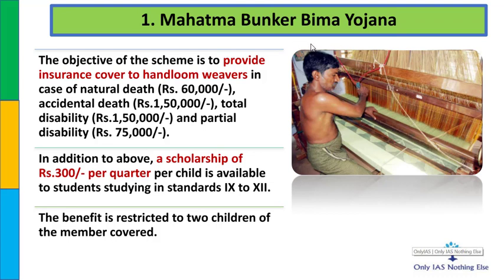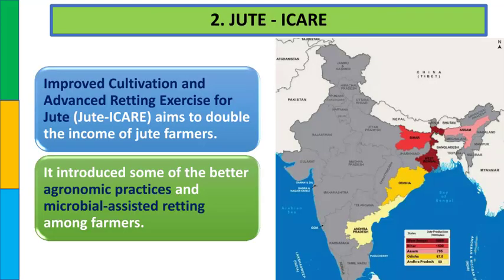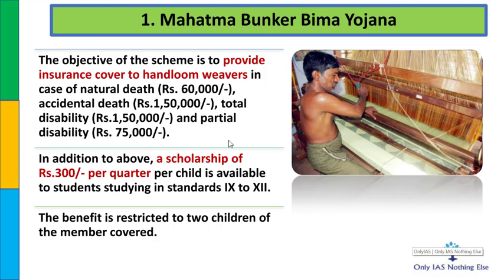बीमा से related - handloom weavers को all-round covered insurance facility provide की जा रही है, जिसमें death और disability दोनों cover किए गए हैं. Death जो है वो natural और accidental दोनों हो सकता है. Disability में total disability और partial disability दोनों हो सकती है. इसके अलावा एक additional scholarship facility है - जिनके घर में 9th से 12th class के दो बच्चे हों, उनको quarterly basis पर ₹300 per quarter दिया जाएगा. यह specifically याद करना है.